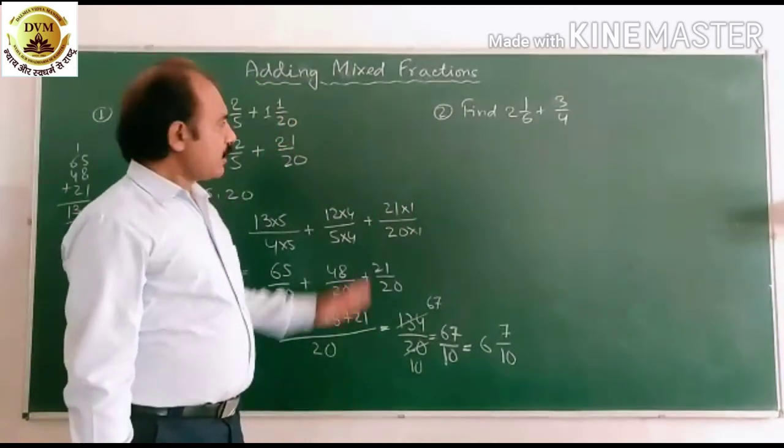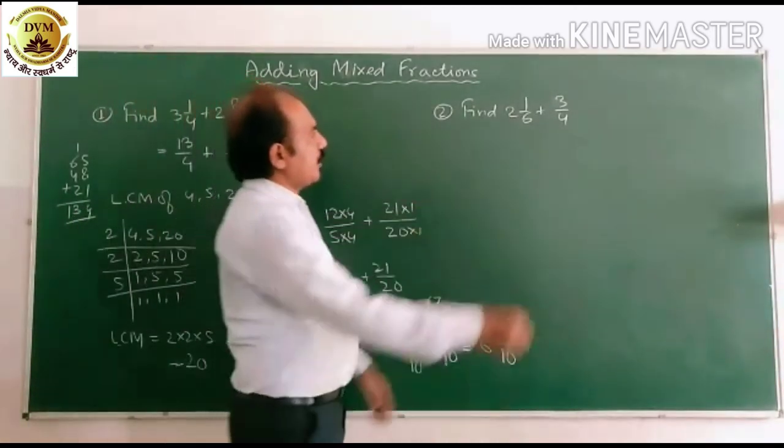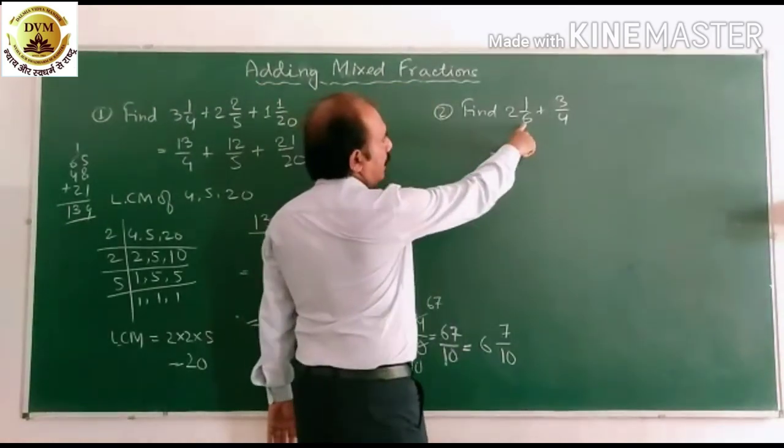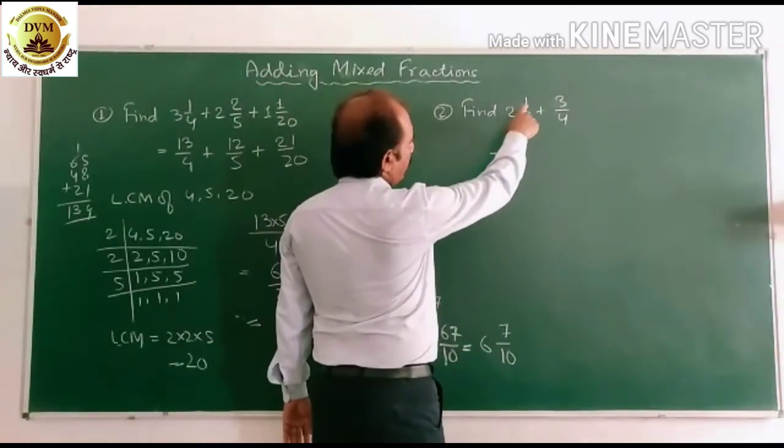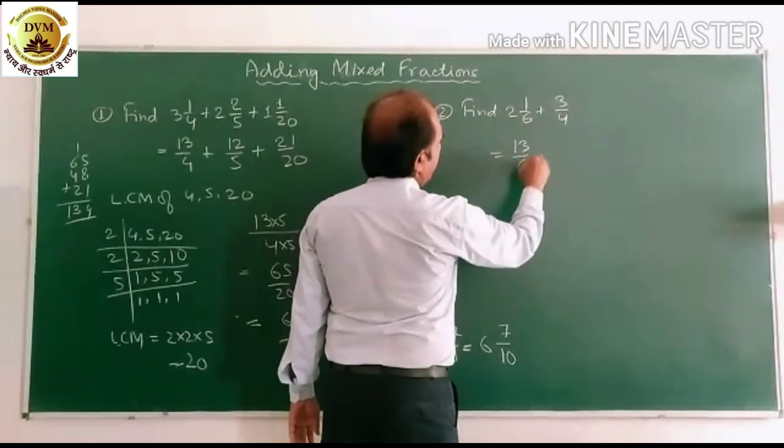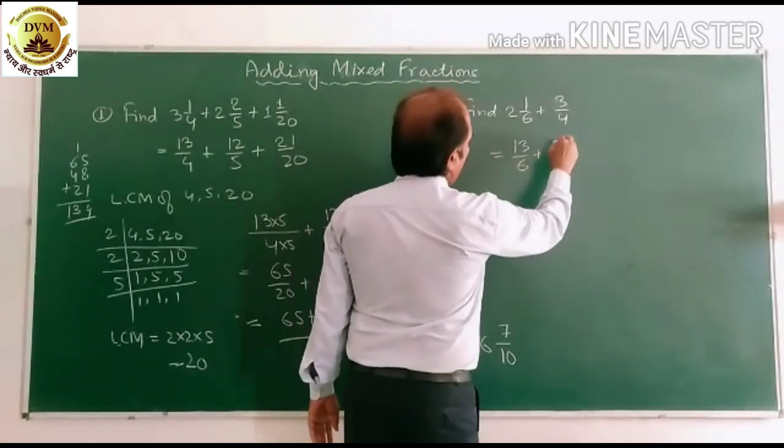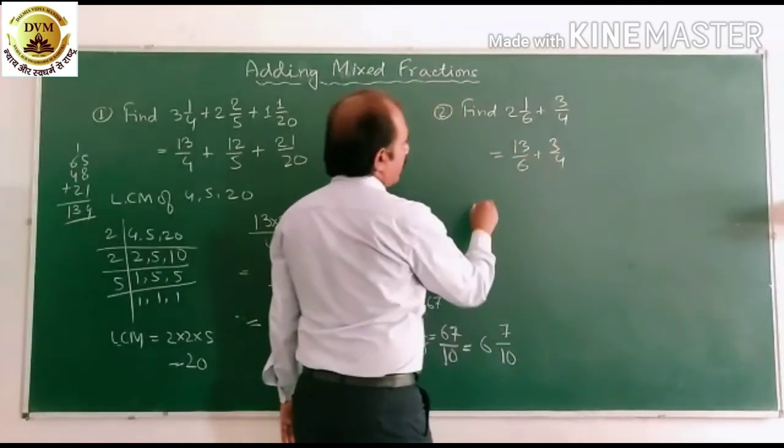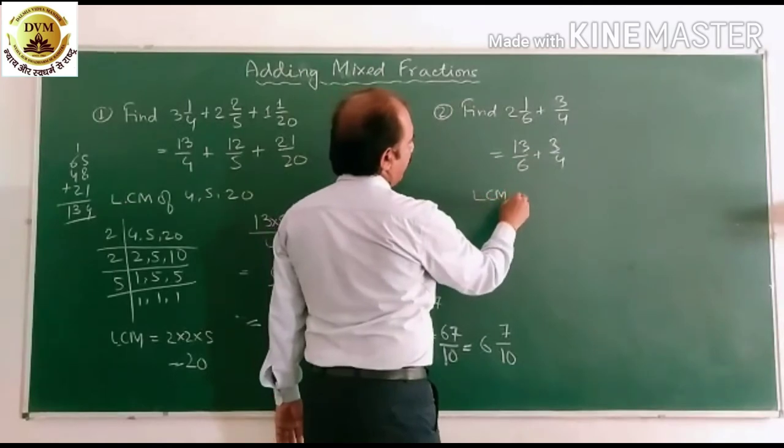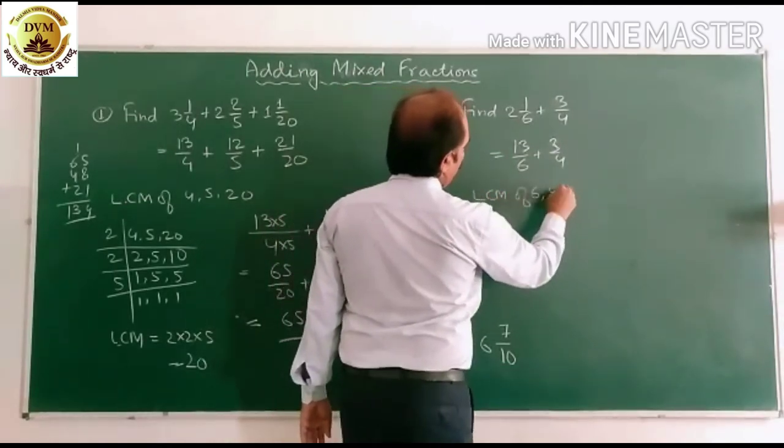In this we can solve it. Okay. Next question is. This is also again mixed number. So 6 into 12 plus 1 is 13 by 6 plus 3 by 4. Also likewise. So LCM of 6 and 4.